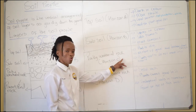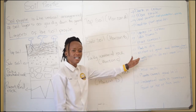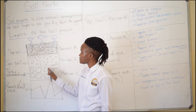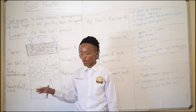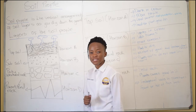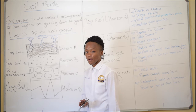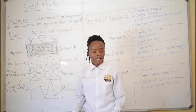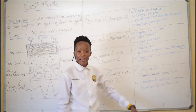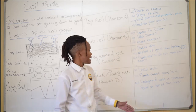Partly weathered rock, also known as Horizon C, is a mixture of gravel and broken-down rocks. As you can see from our sketch, these are broken parts of partly weathered rock. Partly weathered rock is not good for plant growth — we cannot plant our crops in rocks. It has no humus, and rocks don't have nutrients. Plant roots do not move through it easily because of these rocks.